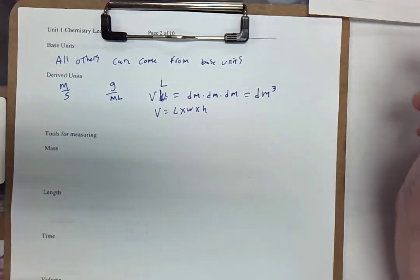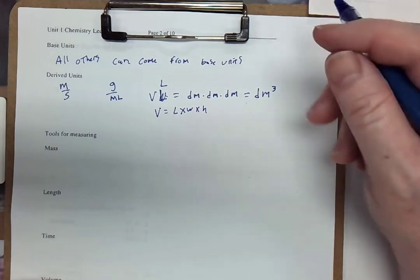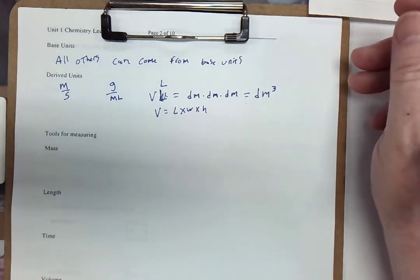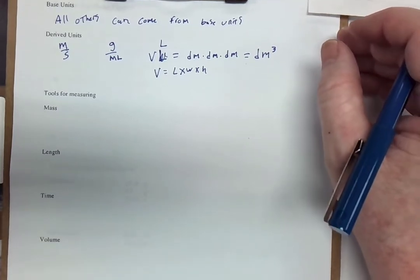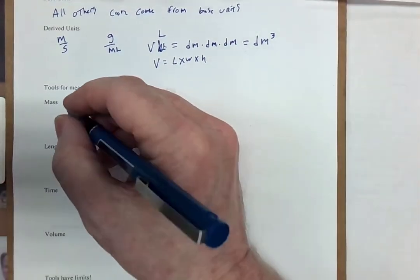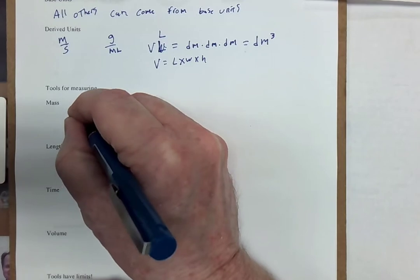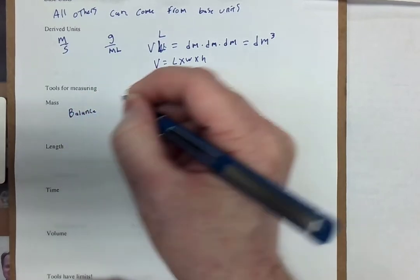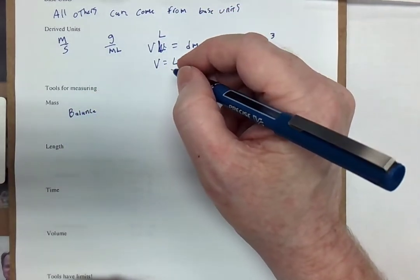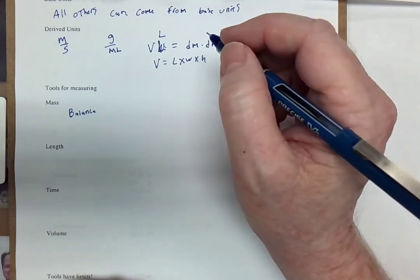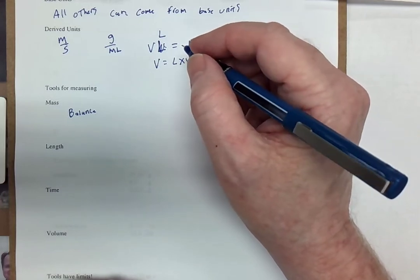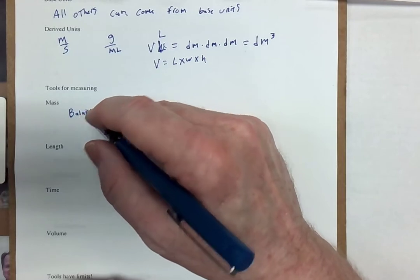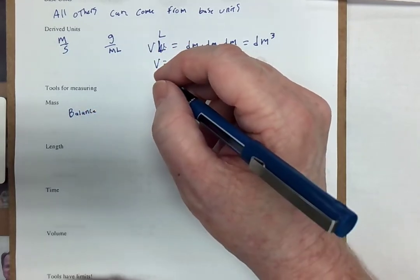Now, we have tools that we use in the laboratory to measure these things. Mass we measure with a balance. Balances measure mass. Scales measure weight, which is in pounds. We'll leave it to the physics class to talk about those differences. So mass is measured with a balance.